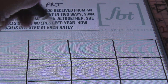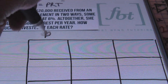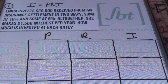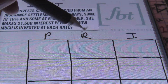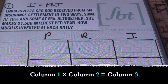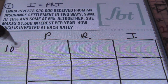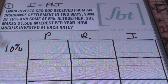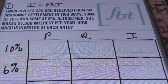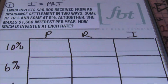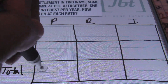I'll start by setting up my table. For the columns, the first column is P for principal, the second column is the rate, and the last one is the interest. So the first column times the second column equals the third column. Linda will be investing in two ways: one at 10% interest, and one at 6%. We have the total amount of $20,000.